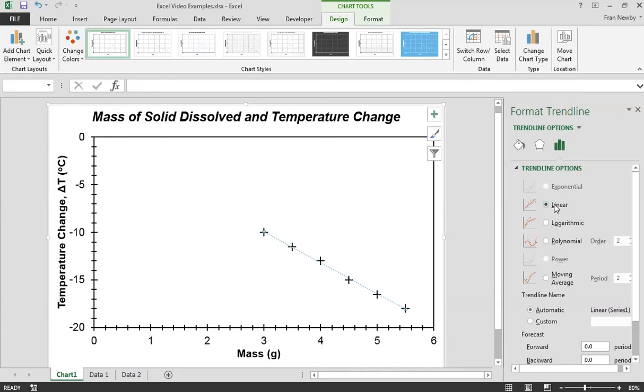The first option is the type of trend line. Most often we're going to be going for a linear one. We could go for a logarithmic one, but remember these are linked to the type of relationship we're expecting to see. If we're not expecting to see a polynomial relationship there's no point fitting it even if it looks slightly better. Most of the time we're going to be sticking with linear.